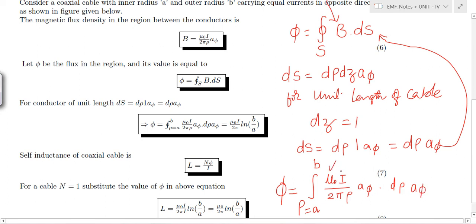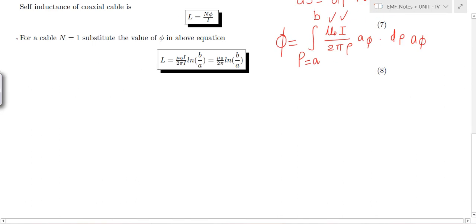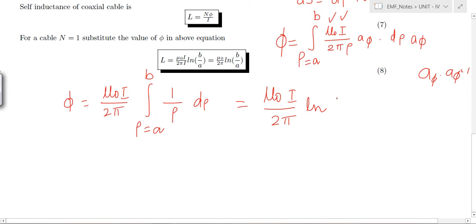The mu 0 is a constant, I is the current that is also constant, 2 pi is also constant. We can bring out these constants outside the integral. By doing so we can write it as phi is equal to mu 0 I by 2 pi integral rho equals a to b 1 by rho d rho. You know that a phi dot a phi is equal to 1, which is equal to mu 0 I by 2 pi ln rho with the limits a and b.